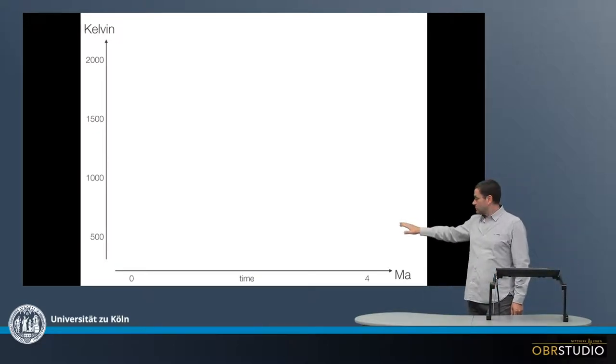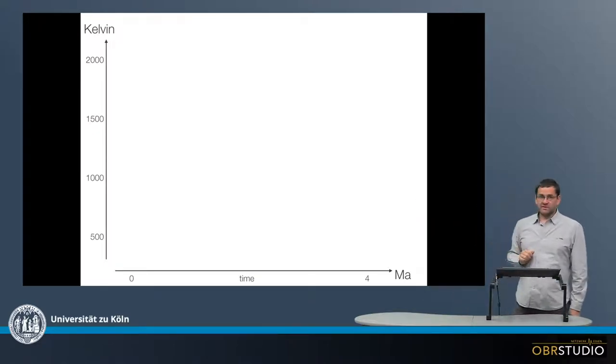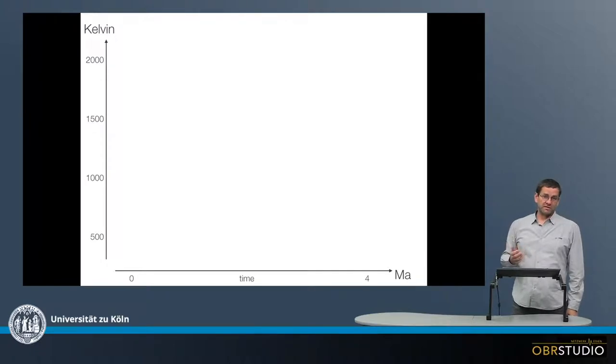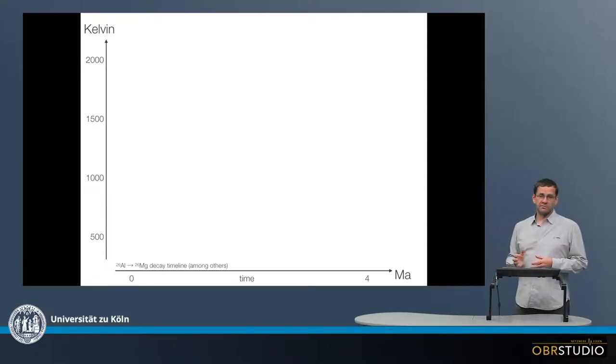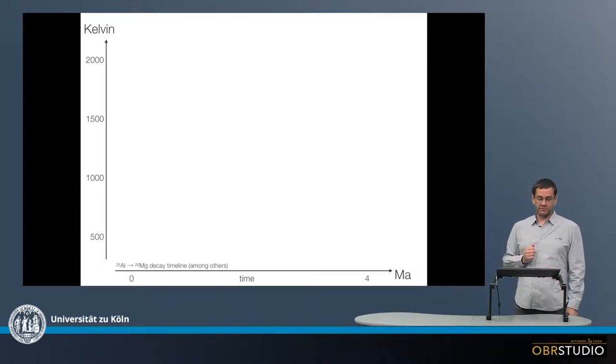I will do this by using this plot. Here on the x-axis is a qualitative timescale between about 0 and 4 million years. We know the timing of the events in the early solar system from the decay of short-lived radionuclides such as the 26-aluminum system, but also from long-lived systems like uranium-lead.